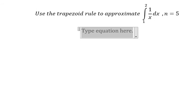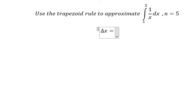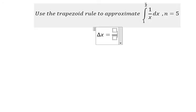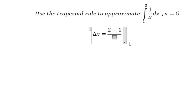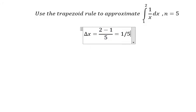First we need to find delta x. We have the top which is number 2, minus the bottom which is number 1, and we divide by number 5. So you get 1 over 5.